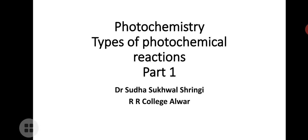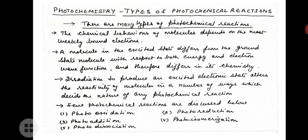Welcome students. Today we'll be studying the unit on photochemistry and types of photochemical reactions. The chemical behavior of molecules depends on the most weakly bound electrons. A molecule in the excited state differs from the ground state molecule with respect to both energy and electron wave function, and therefore differs in its chemistry. Radiation that produces an excited electronic state alters the reactivity of molecules. Photochemical reactions discussed here include photo oxidation, photo reduction, photo addition, photo isomerization, and photo dissociation.